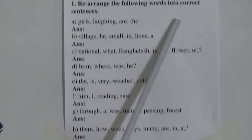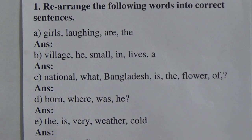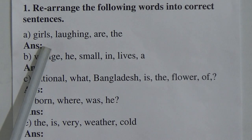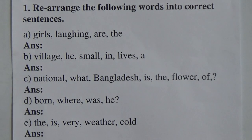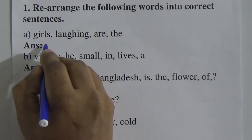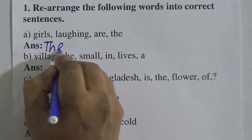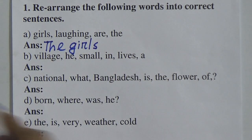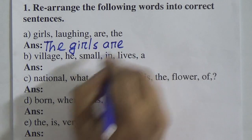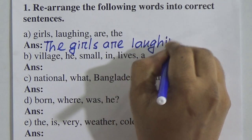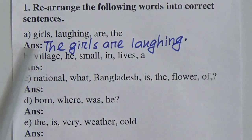So, let's come to Class 3 English Literature, topic Rearranging. Rearrange the following words into correct sentences. Number A: 'Girls laughing are the.' This is an assertive sentence, so we take the subject first. The subject is 'the girls.' The first letter of the first word is capital. The girls — then we put the verb — the girls are — then the last word: laughing. The girls are laughing.